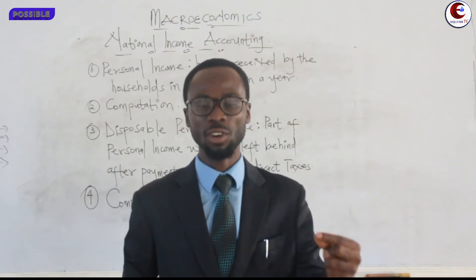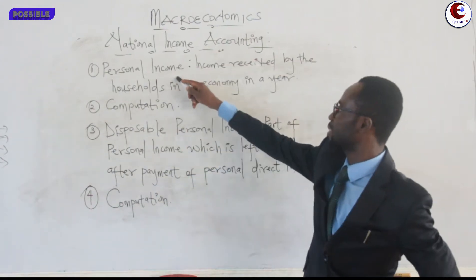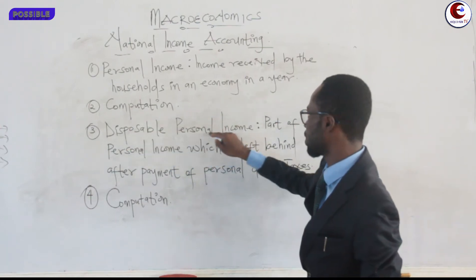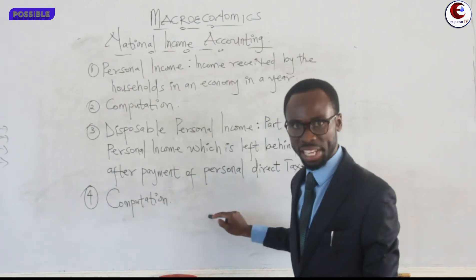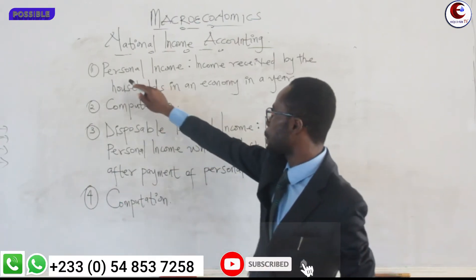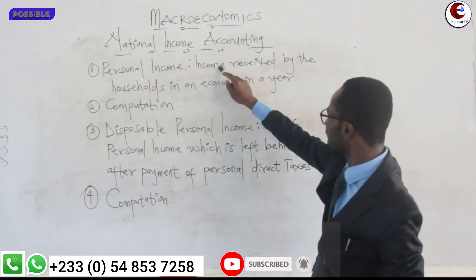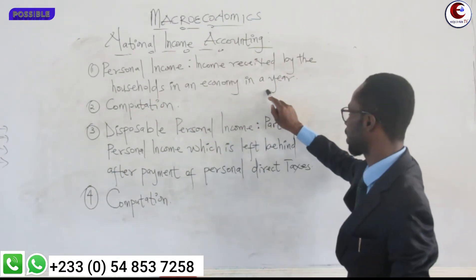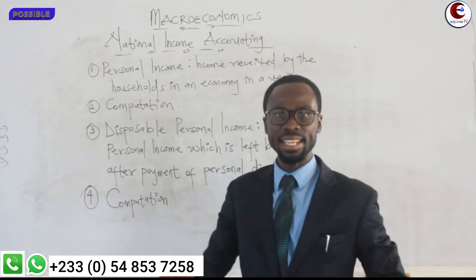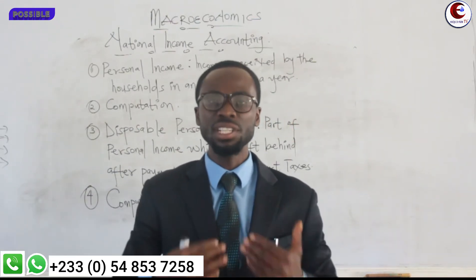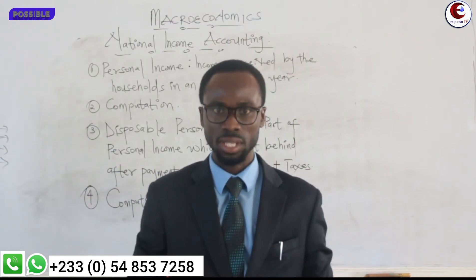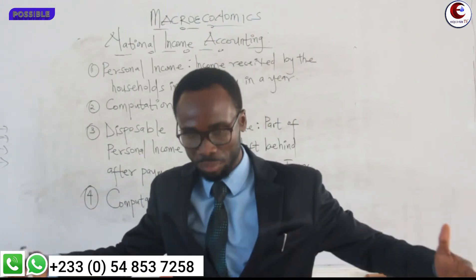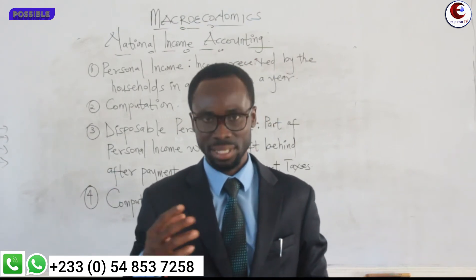Today we are going to look at personal income and how to compute it, disposable personal income, or disposable income, and its computation. Personal income is an income that is received by the household in an economy in a year — the summation of all incomes received by households in an economy over a period of time, say one year, is what is referred to as personal income.